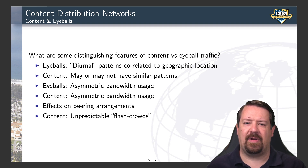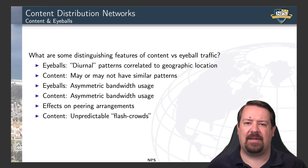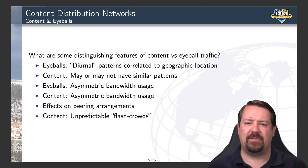Both of these types of networks tend to have asymmetric bandwidth usage, meaning eyeballs typically consume traffic so their download is higher than their upload, whereas content networks tend to be delivering content so their upload is higher than their download. These sorts of asymmetries can have effects on the peering arrangements that the providers serving these networks are willing to engage in. Content networks also have the phenomenon of unpredictable flash crowds, meaning large volumes of legitimate traffic triggered by some outside event.